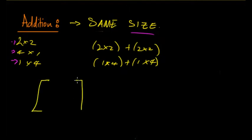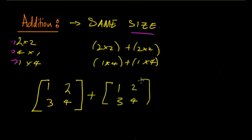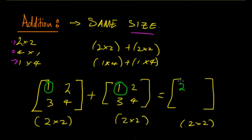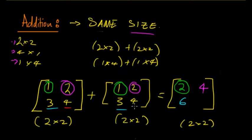When you do add matrices, it's relatively simple. If you have the matrix [1, 2; 3, 4] plus [1, 2; 3, 4], you get a two by two result. You take the first row, first column entry and add it to the corresponding entry to get 2. You do this for all positions — just find each individual entry and add it to the corresponding entry in the other matrix.